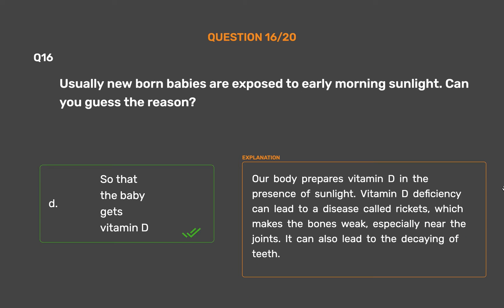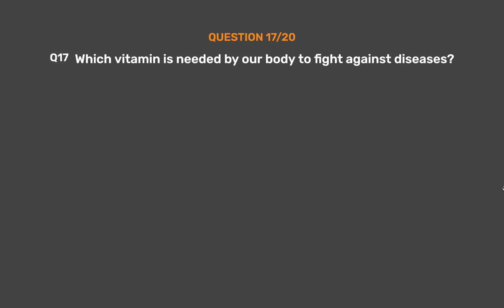Our body prepares vitamin D in the presence of sunlight. Vitamin D deficiency can lead to a disease called rickets, which makes the bones weak, especially near the joints. It can also lead to the decaying of teeth.